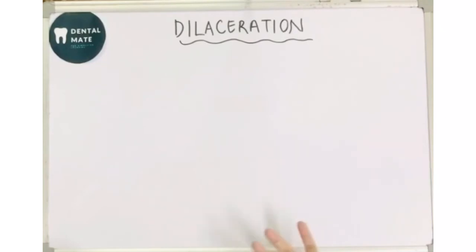And do let me know in the comment section below when is the bull's eye appearance seen in dilaceration. So if we talk about the definition of dilaceration, then it is the abnormal angulation or bend in the root surface, in the root of a tooth.